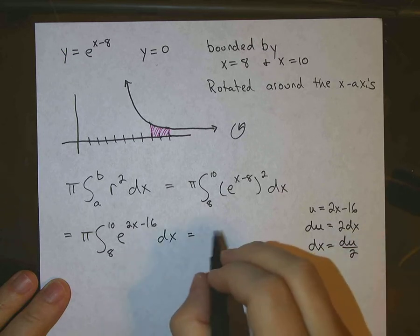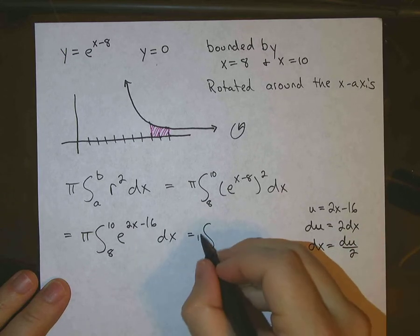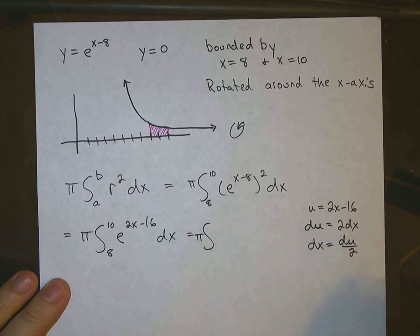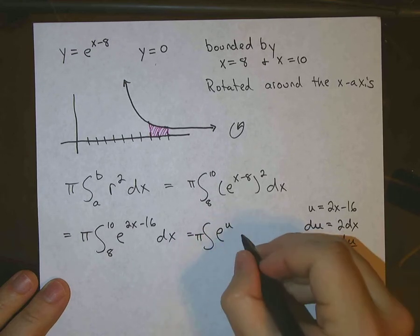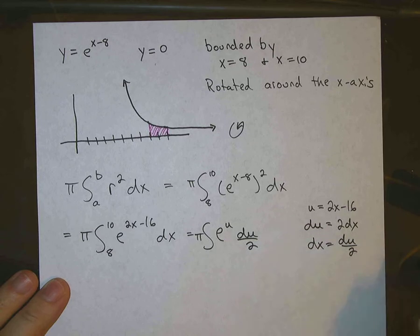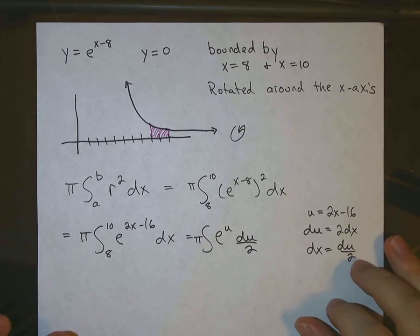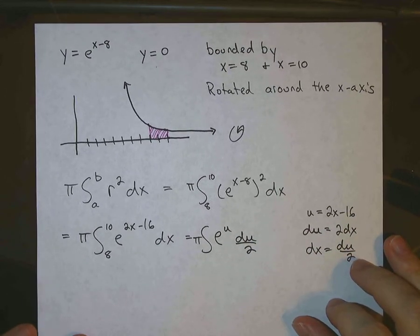Okay, so we can sub back in the integral. We still have pi. Create our new limits in a second. We have e to the u, du over 2. Now, of course, since we've changed the u, we want to go ahead and change our limits accordingly.